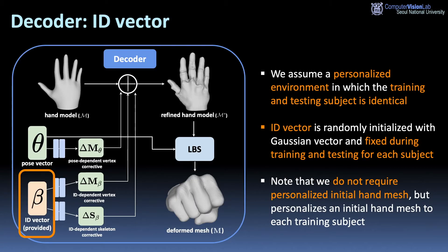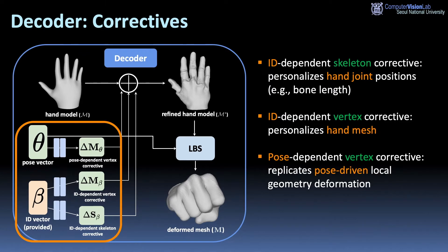We assume a personalized environment in which the training and testing subject is identical. The ID vector is randomly initialized with a Gaussian vector and is fixed during training and testing for each subject. Note that we do not require a personalized initial hand mesh, but personalize an initial hand mesh to each training subject.